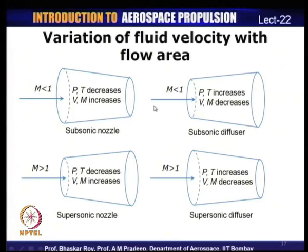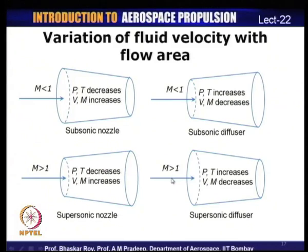For the supersonic version: if M > 1 at inlet and area increases, pressure and temperature decrease, velocity and Mach number increase — this is a supersonic nozzle. For a supersonic diffuser (decreasing area), pressure and temperature increase and Mach number decreases. A supersonic diffuser at least theoretically acts as a subsonic nozzle, and a subsonic diffuser acts as a supersonic nozzle at M > 1.